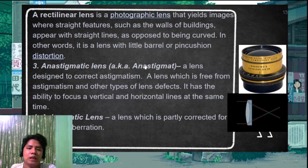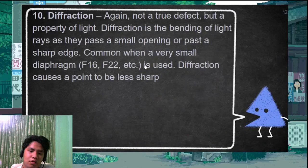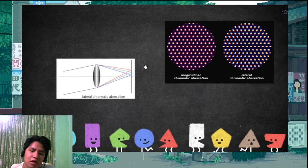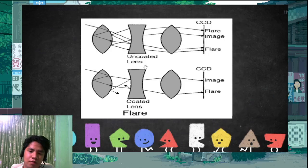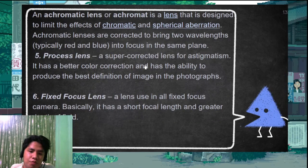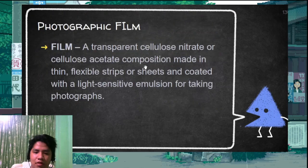The anastigmat lens corrects astigmatic aberration. The achromatic lens corrects lateral and longitudinal chromatic aberration. There is also the process lens, a super-corrected lens for astigmatism, and the fixed focus lens — these are common single-lens types used in cameras.